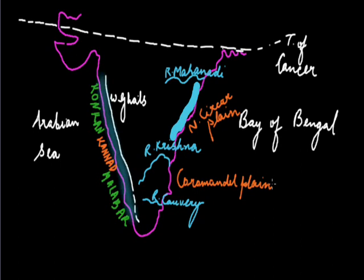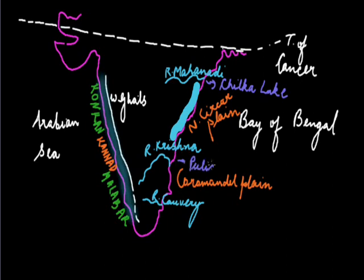The Mahanadi, Godavari, Krishna and Kaveri are major rivers which originate from the great plateau and form deltas at their mouths. A delta is formed by the deposition of sediment brought by rivers. A chain of bars found along the coast has given birth to numerous lagoons. The Chilka lake in Orissa and the Pulikat lake in Andhra Pradesh are good examples of lagoons.